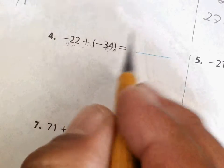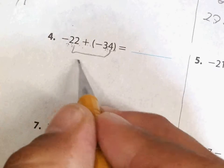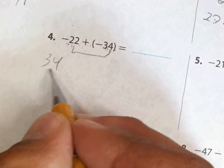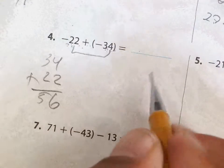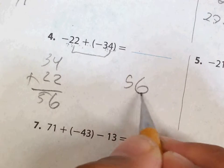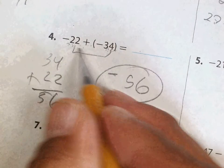In this case, you add them together. So 22 plus 34 gives me 56, and then I gotta keep the sign negative because they're both negatives.